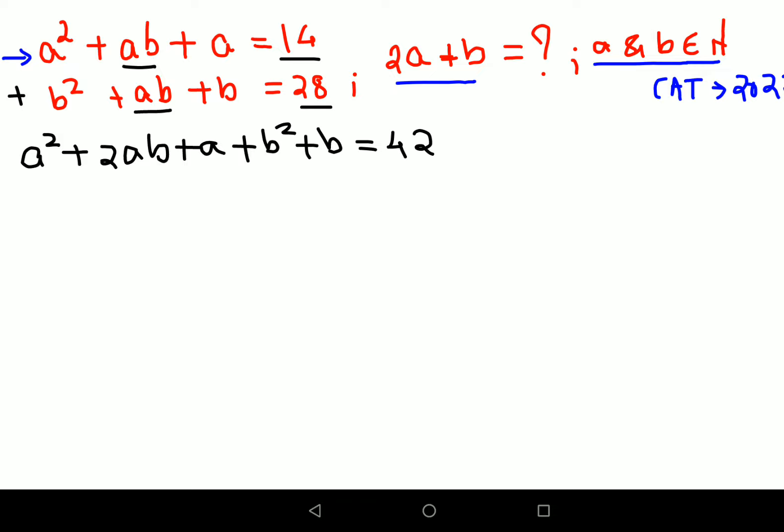Now if you look closely, when I write this A² + 2AB + B² together and I will write A and B on the other side, so this is what you are getting. Now if you look, this is nothing but the expansion of (A + B)² and then you have plus A plus B equals to 42.